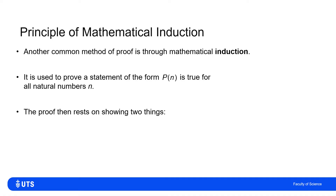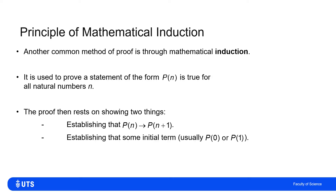To prove this, we need to show two things. We need to establish that the truth of p(n) implies the truth of p(n+1). So we show that if it's true for the nth case, it is definitely true for the (n+1)th case. Then all we have to do is establish some first case — usually p(0) or p(1).